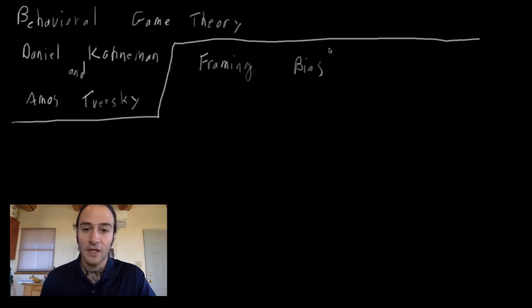So a framing bias says that people's ultimate decision is influenced by how the decision is presented to them. So let's give the example that they used. The example that they used was that there was a disease that was going to spread through some highly populated area. And they gave one group of people this possible choice.